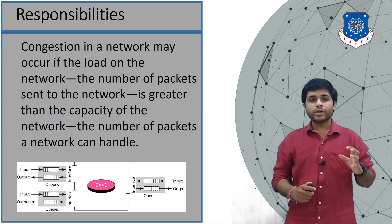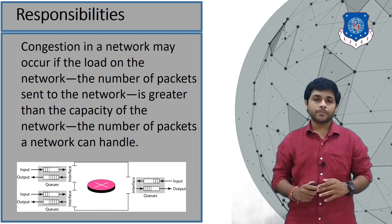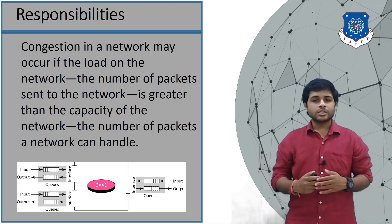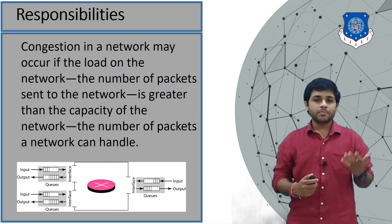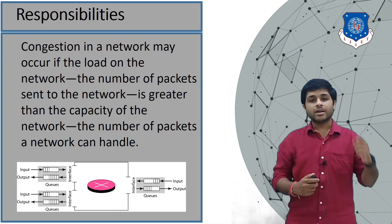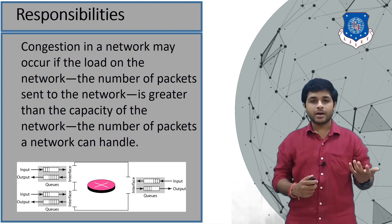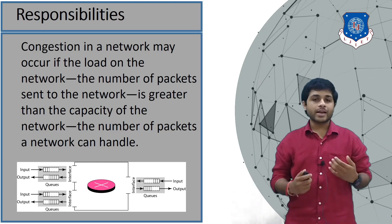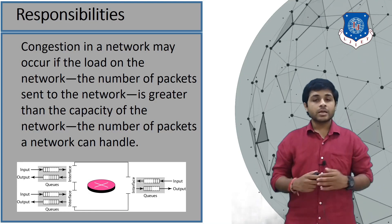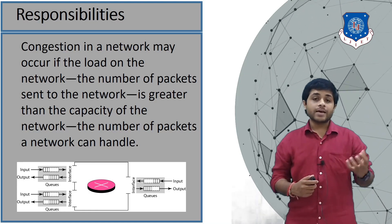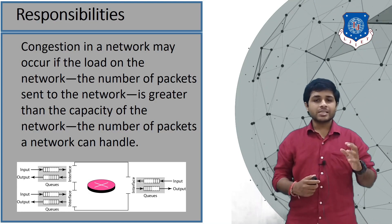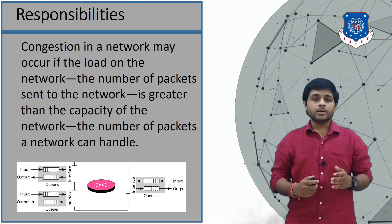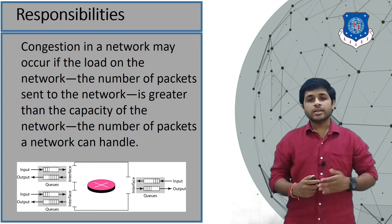The sender should be sending packets according to the capacity of the link. There are many reasons for congestion: the capacity of the link can be lower, the rate of the sender can be higher, the intermediate device in the network could be working at very slow speed, or the intermediate device may have insufficient memory. These are the causes of congestion.